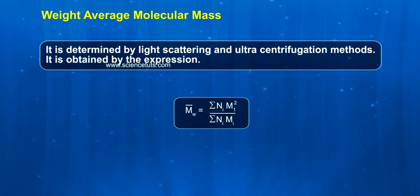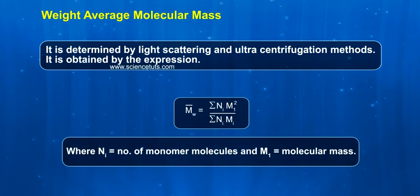ni m1 squared by sigma ni mi, where ni stands for number of molecules and m1 stands for molecular mass.